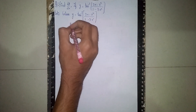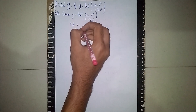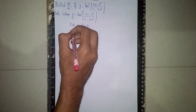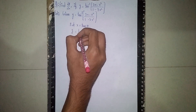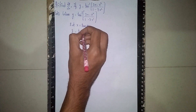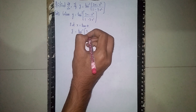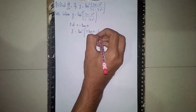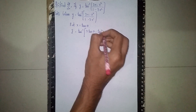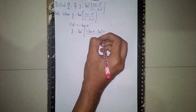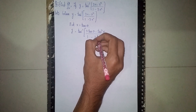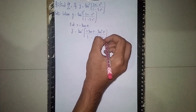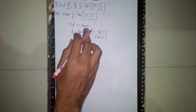Put x is equal to tan theta. So it becomes y is equal to tan inverse of (3 tan theta minus tan cubed theta) by (1 minus 3 tan squared theta). Now I substitute the value of x as tan theta.